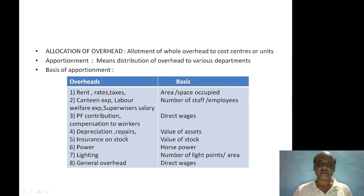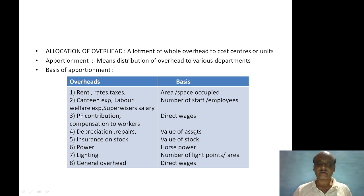Repairs and depreciation — these two items are to be allocated on the basis of value of assets. Repairs to plant and depreciation of plant are based on plant value. Depreciation of building is based on building value.